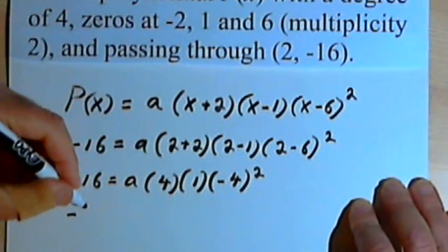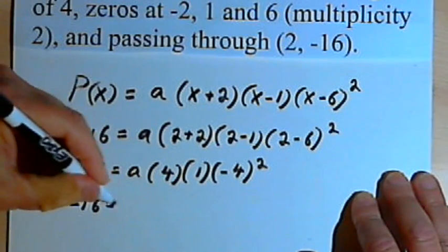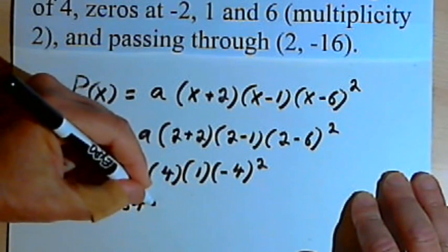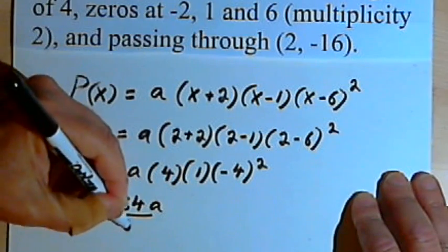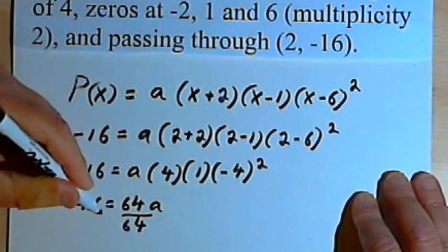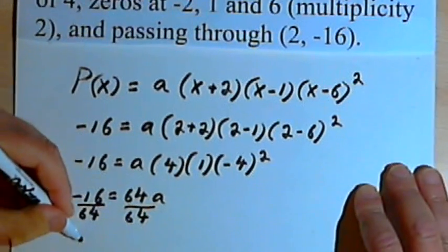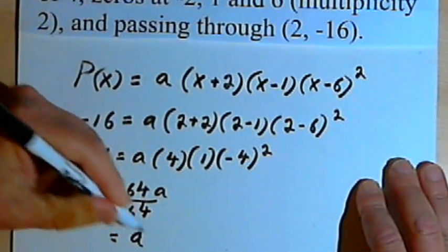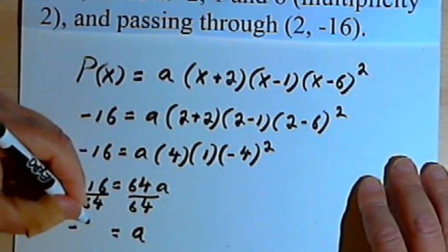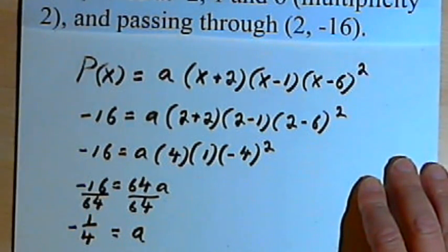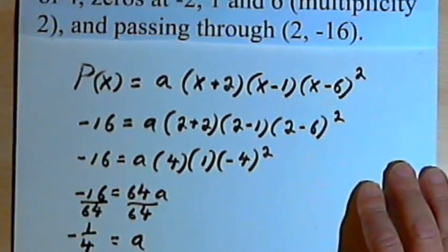So negative 16 equals 64a. I'll divide both sides of this equation by 64, and I'm going to get a equals negative 1 quarter. So now I know what the constant is.